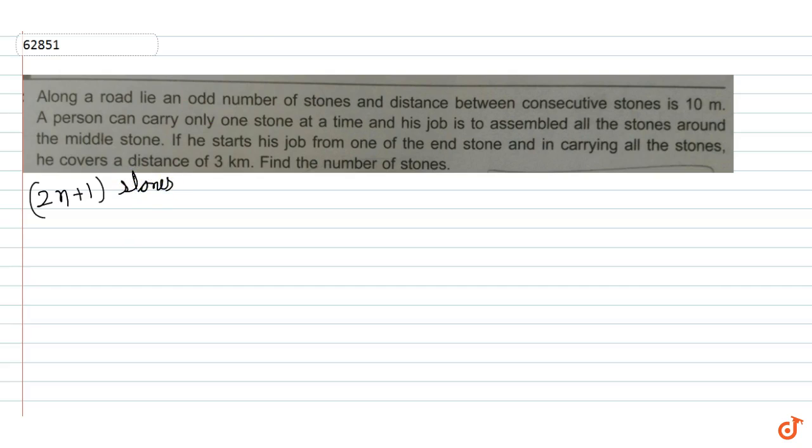All the stones are along a line. So total 2n plus 1 stones. Let's see, this is my first stone, last stone is 2n plus 1.